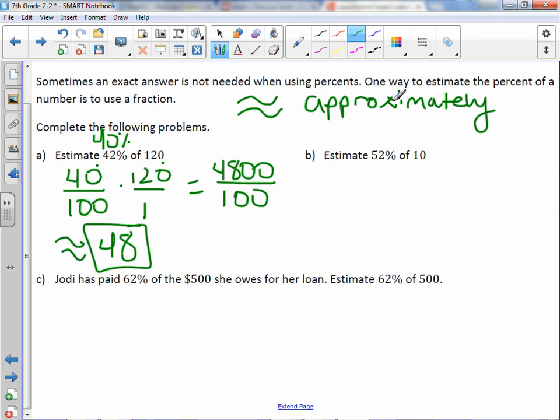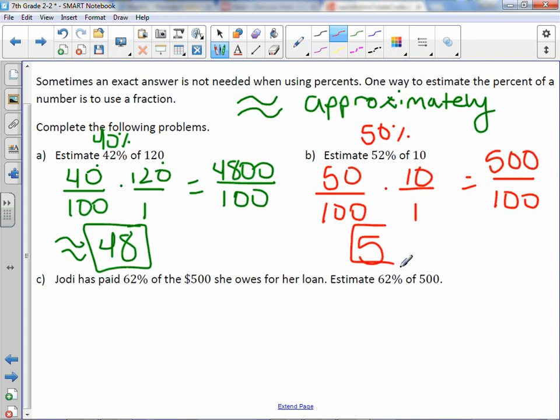Letter B, estimate 52% of 10. 52 is close to 50, so 50 over 100% times 10 over 1. 50 times 10 is 500 over 100. Our estimation is 5.